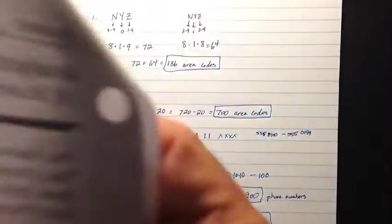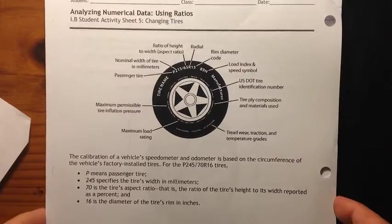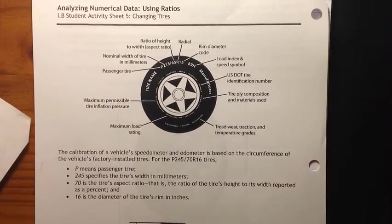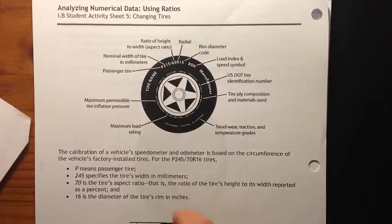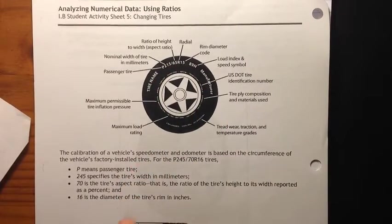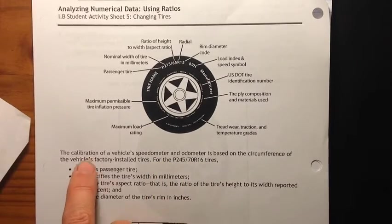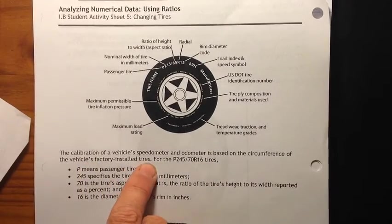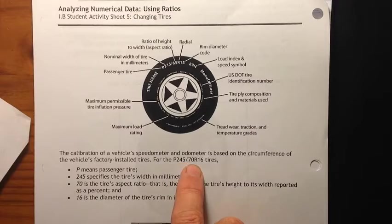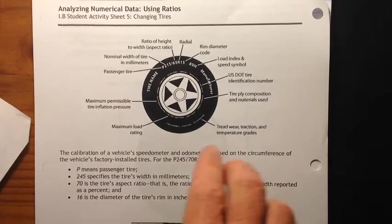Okay, so first we need to define a few things here. We've got a picture of a tire here. It gives you some information about all the stuff here, which also is kind of explained down here. Calibration of a vehicle's speedometer and odometer is based on the circumference of the vehicle's factory installed tires. For the P245/70R16, so the factory installed tires that are on the car or truck when you get it.